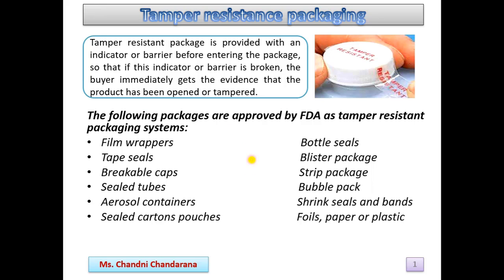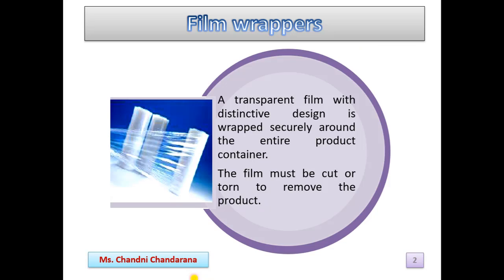These are the examples of tamper resistant containers or packaging. We will see: film wrappers, bottle seals, tap seals, blister packages, breakable caps, strip packages, sealed tubes, bubble packs, aerosol containers, shrink seals and bands, silk carton pouches, and foil paper or plastic — each in detail one by one.